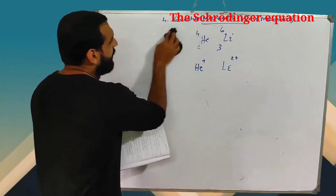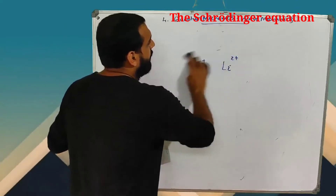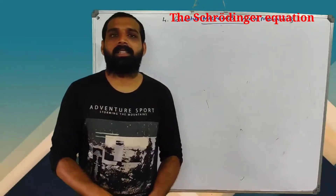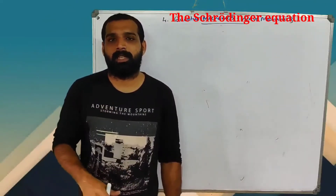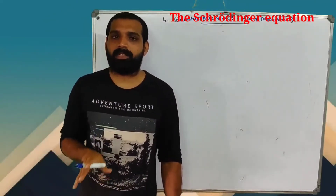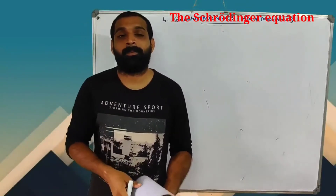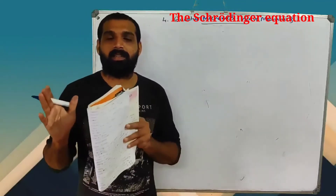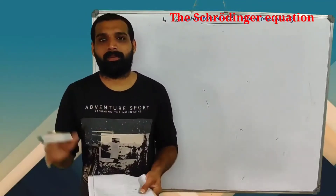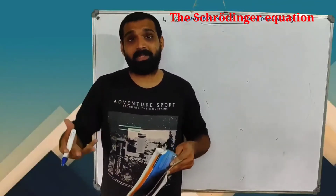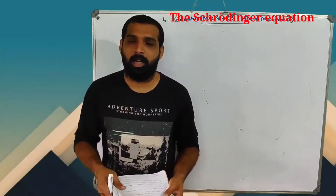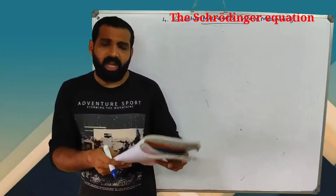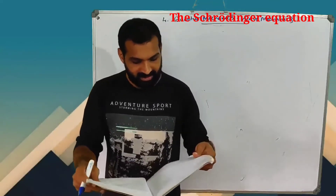Classical mechanics is an approximation of quantum mechanics. Quantum mechanics is the more general framework. The correspondence principle states that when quantum numbers are increasing, quantum mechanics tends toward classical mechanics — it gives classical results. Higher quantum numbers give classical results.